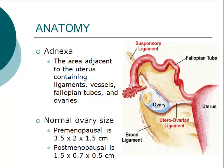The term adnexa refers to the tissues adjacent to the uterus, which include the ovary, fallopian tube, and their associated ligaments and blood vessels. Note that the postmenopausal ovary is normally smaller than the ovary in a reproductive-age woman.